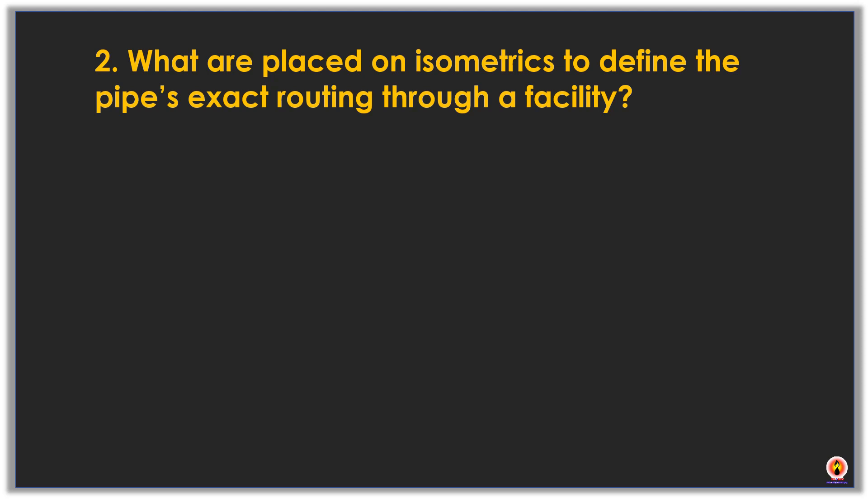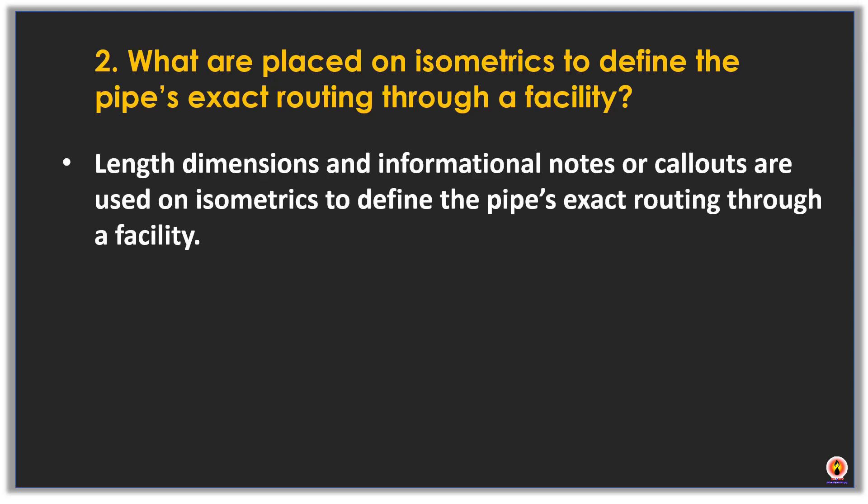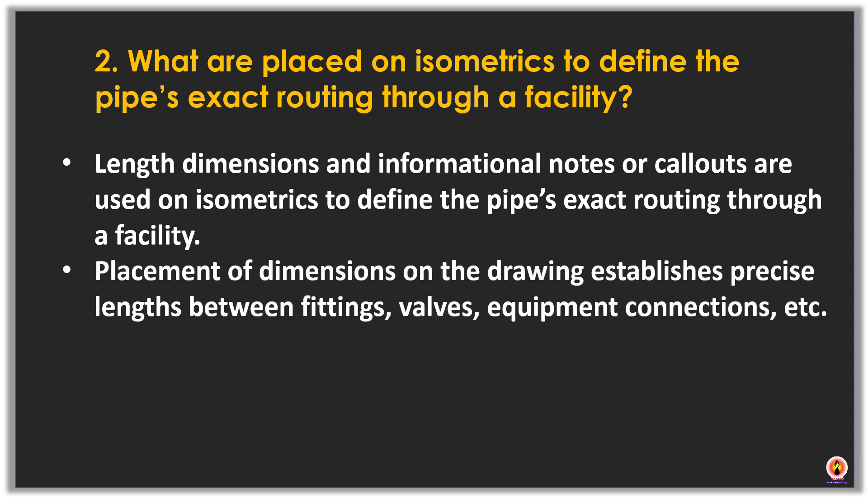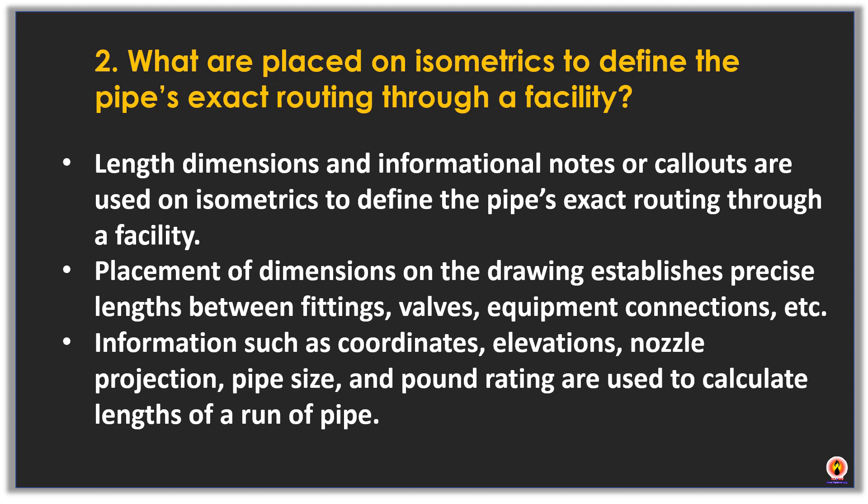Length dimensions and informational notes are used on isometrics to define the pipe's exact routing through the facility. Placement of dimensions on the drawing establishes the length between fittings, walls, equipment connections, etc. Information such as coordinates, elevations, projections, pipe size, and pound rating are used to calculate the length of runs of pipe.